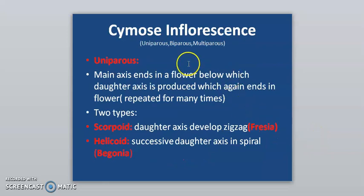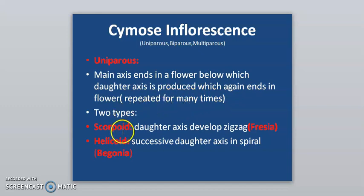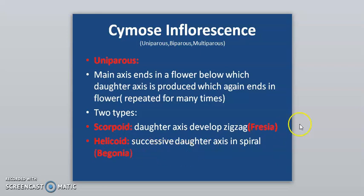Cymose inflorescence may be uniparous, biparous, or multiparous. In uniparous cyme, the main axis ends in a flower, below which a daughter axis is produced which again ends in a flower, repeated many times. There are two types: scorpioid, where daughter axes develop in a zigzag manner — example is Freesia; and helicoid, where successive daughter axes are on one side — example is Begonia.